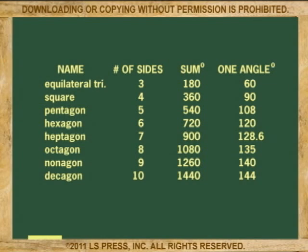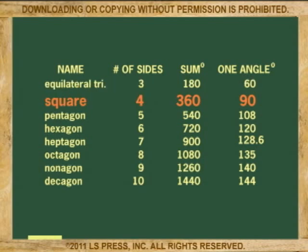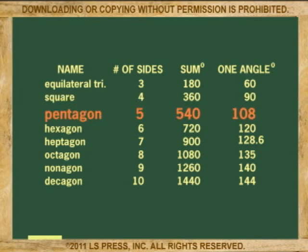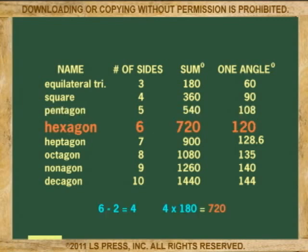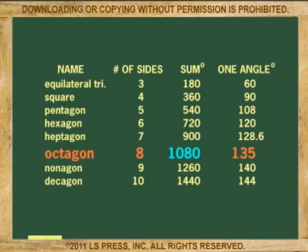The table here shows the name of each regular polygon, starting with the three-sided regular polygon, also called the equilateral triangle, whose interior angles are up to 180 degrees. Next is the square, at 360 degrees. Then the five-sided polygon, known as the pentagon, at 540 degrees. Next, the six-sided hexagon: 6 minus 2 equals 4, and 4 times 180 equals 720 degrees. Then the heptagon, or seven-sided, at 900 degrees. And the octagon, at 1080 degrees.